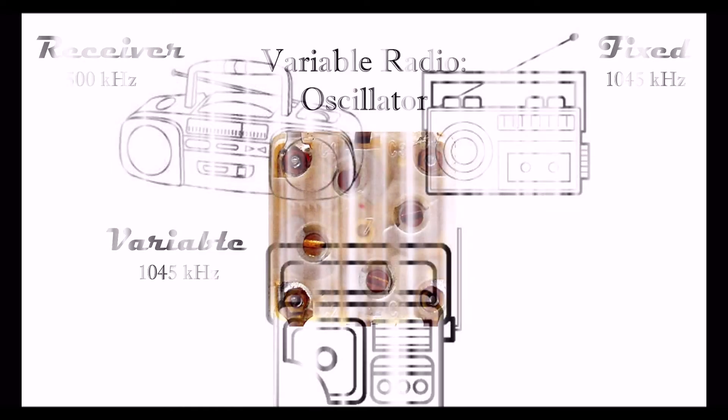Now, using a screwdriver, remove the cover from your variable radio. Locate the variable radio's oscillator. Touch the post on each corner of the oscillator. When you find the one that changes the pitch, stop there.